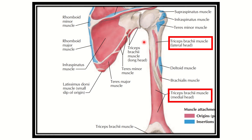In this picture we can see the triceps muscle. The lateral head arises from this part, and the medial head of the triceps arises from here. This is the long head, which arises from the infraglenoid tubercle. So these are the three heads of the triceps.